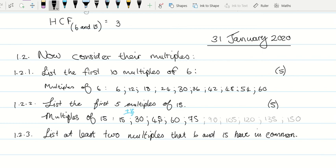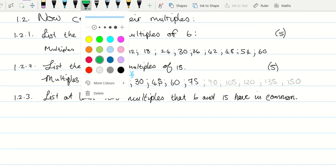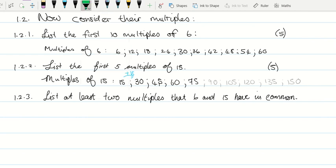I'm going to make use of color and then I'm going to highlight everything that I see that are the same by the multiples of 6 and 15. So 15 has 30, and 6 has 30 as well. Is that correct? And then what else do we have? 60 and 60 as well. So there's my two multiples.